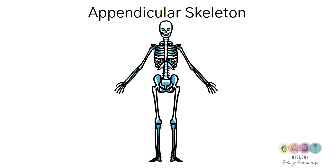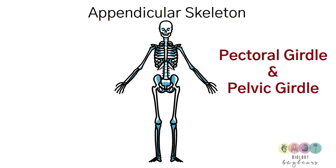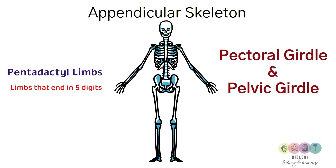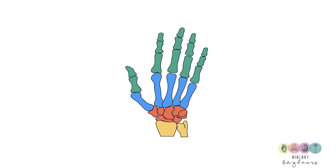Moving to important details related to the appendicular skeleton — it's made up of the two girdles, the pectoral girdle and the pelvic girdle, and the limbs. These are referred to as pentadactyl limbs — that's an important term meaning limbs that end in five digits. Your arms end in five fingers and your legs end in five toes.